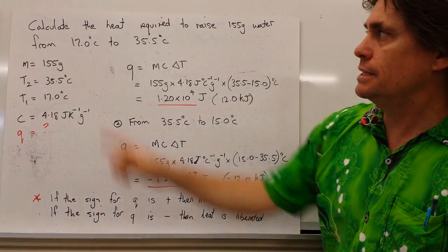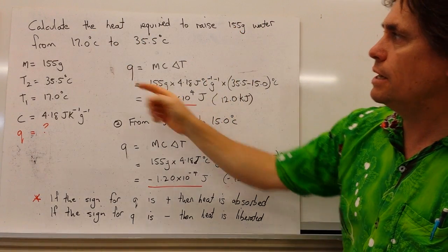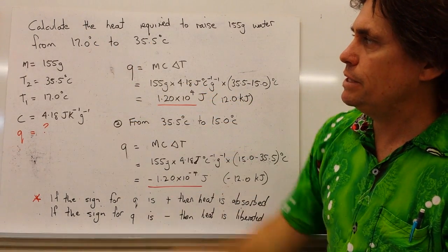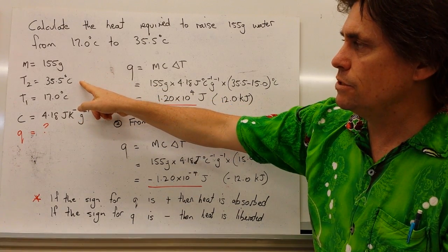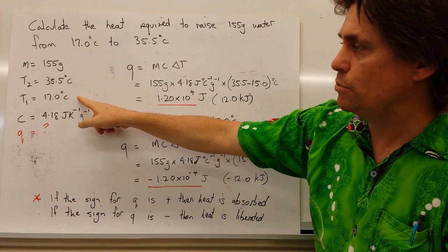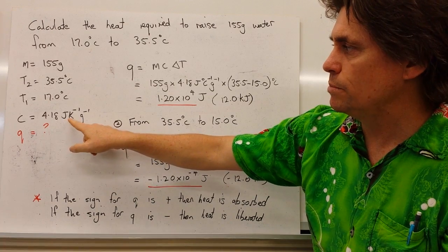We have a question that says calculate the heat required to raise 155 grams of water from 17 degrees C to 35 degrees. So we write down what we know, our mass is 155 grams, final temperature is 35.5, initial temperature is 17.0. Our specific heat for water is 4.18 joules per gram per kelvin, we've got different units here.